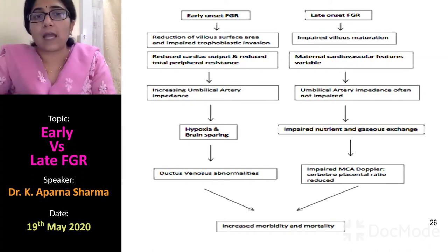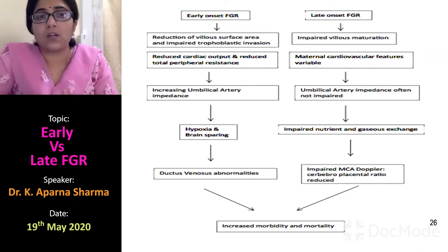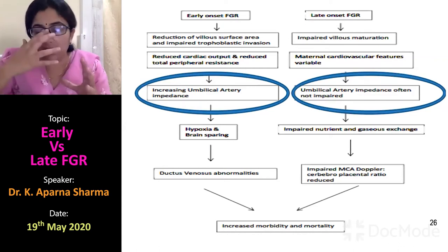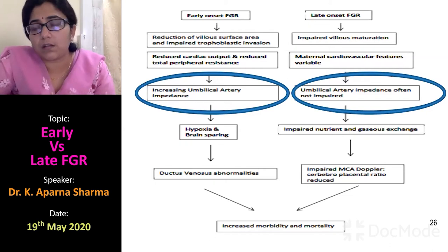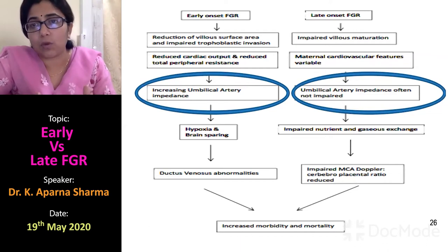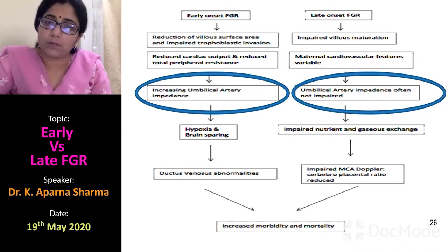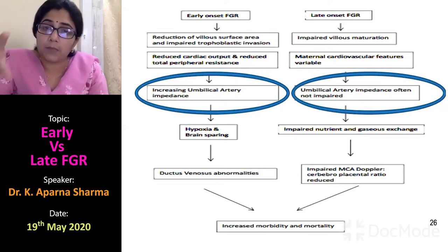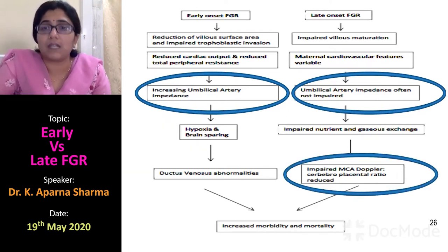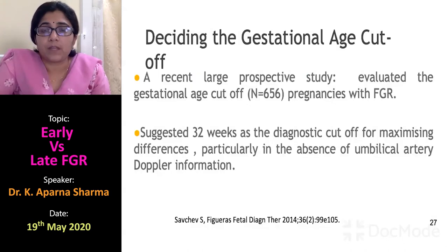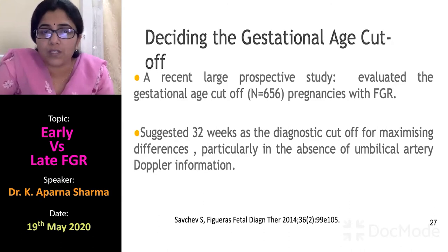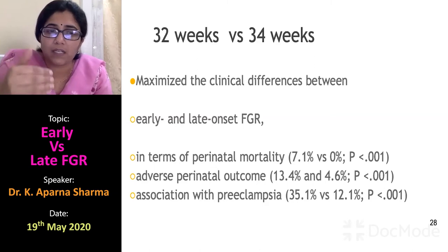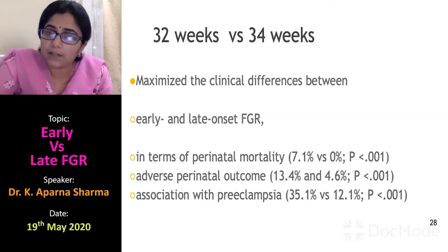In late onset IUGR, the problem is impaired villous maturation rather than loss of surface area. Because the surface area is not affected and there is variable maternal cardiovascular adaptation, umbilical artery impedance may not be increased. In this situation, the key indicator is the MCA Doppler and the cerebro-placental ratio. The umbilical artery, which is the main sign in early onset, might be normal — leading to confusion about management. The cutoff between early and late is debated as 32 or 34 weeks; however, 32 weeks has been shown to maximize the clinical difference in perinatal mortality and association with preeclampsia.